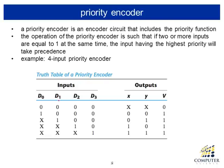Let's look at an example with a four-input priority encoder. The four inputs are d0 through d3, where d0 is the least significant position and d3 is the most significant position. The output is xy, where x is the most significant position and y is the least significant position. For example, if you have a one on d0 and zeros on the rest of the inputs, the output produces 00, which is binary for decimal zero — indicating input zero has a one.